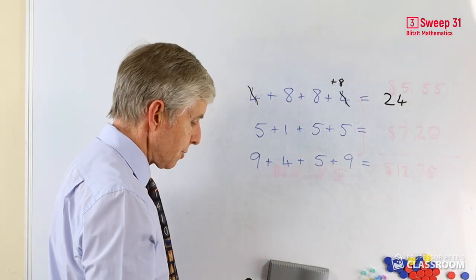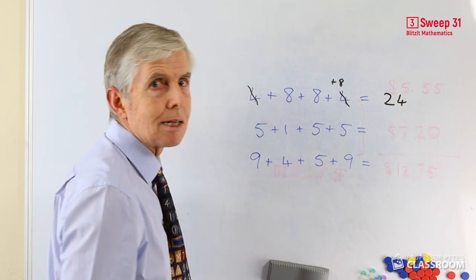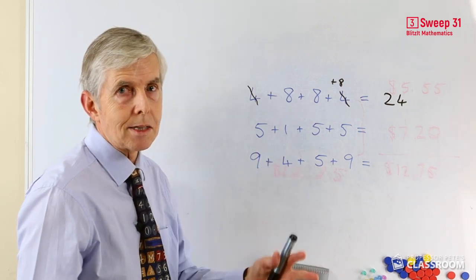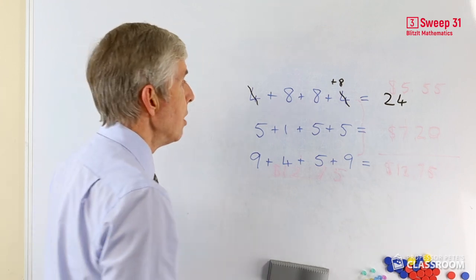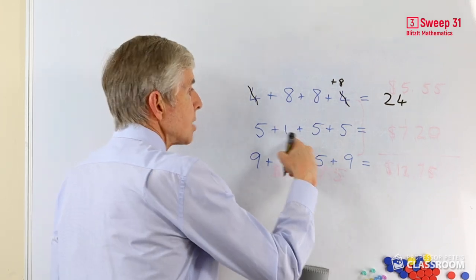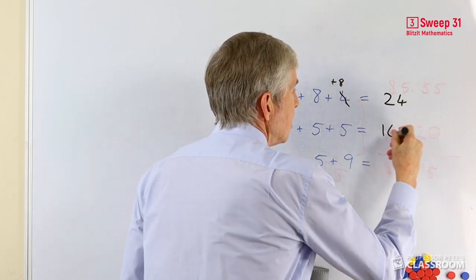5 plus 1 plus 5 plus 5. This one does lend itself to what is 5 plus 5, that's a 10, we can then add 5 and 1 makes 6. But it also allows us to say there are three fives, which is 15 plus one more, and that is 16.